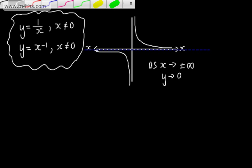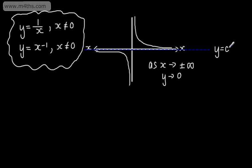As a result, the x-axis is a horizontal asymptote, and we write this line as y = 0. This is what we call an asymptote. We've got two of these — a horizontal and a vertical one. So y can tend to 0, but it can't be equal to 0.